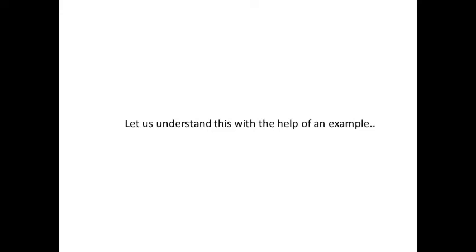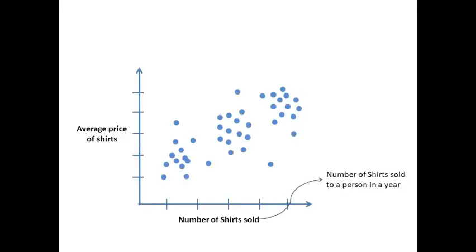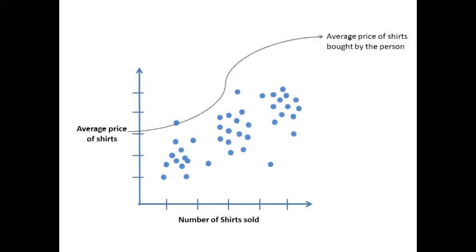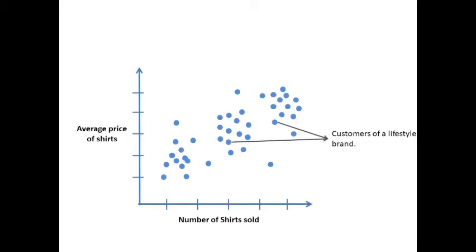Let us understand this with the help of an example. This is the number of shirts sold to a person in a year, and this is the average price of shirts bought by the person. And the blue dots are customers of a lifestyle brand. So, for example, a single blue dot here represents what is the number of shirts he has bought. Say, for example, he has bought three shirts. And on the y-axis, we have the average price of those three shirts.